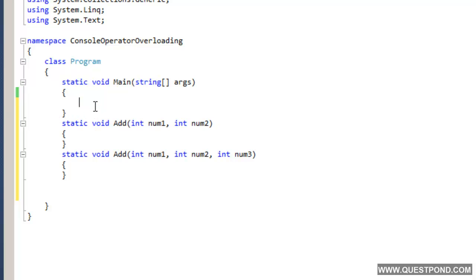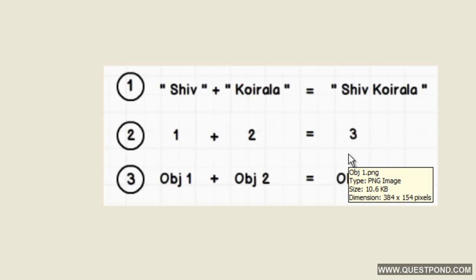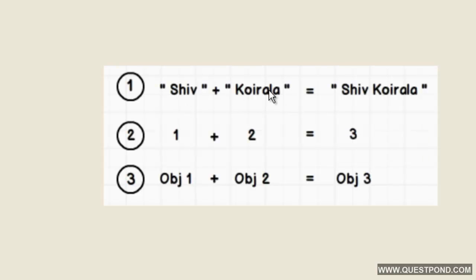Operator overloading is absolutely synonymous to method overloading. One example of operator overloading is the plus sign. The plus sign, depending on data types, will either do concatenation or arithmetic addition. For example, if I give the plus sign strings — 'shiv' and 'querala' on both the left and right hand side — it actually concatenates both values and makes it 'shivquerala'. But the same plus sign, when placed before numbers, actually does addition.